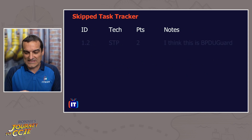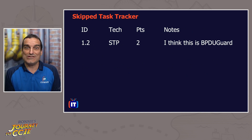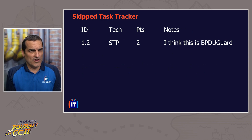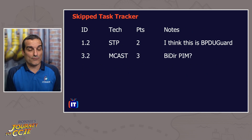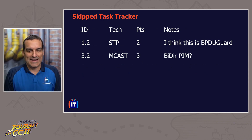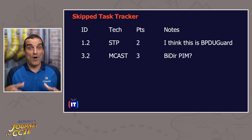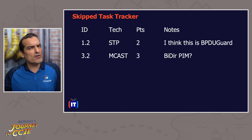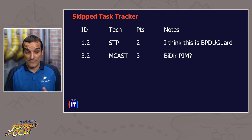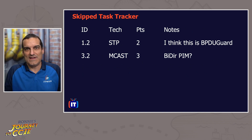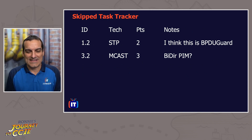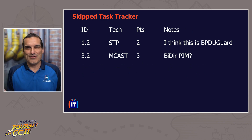This really helped me with my tracker strategy. I did use a tracker as I went through the lab exam, but I needed a very simple one to track anything I might have skipped. Sure enough, the only things on it were non-core tasks — like '1.2: something involving Spanning Tree Protocol, worth two points, possibly BPDU Guard,' or '3.2: MCAST, three points — I think it's bidirectional PIM, but I'll come back to that.' Interestingly, multicast could be core, but in my example I'd read it over and determined that whether I configured it or not would make no difference — so it was a non-core task I was skipping.